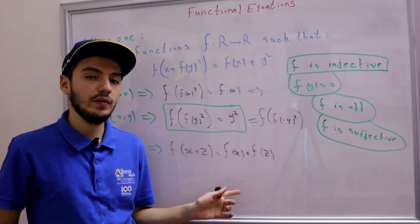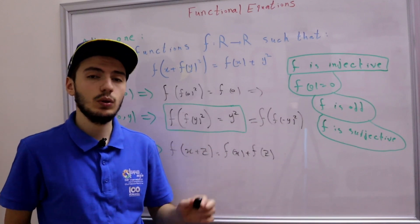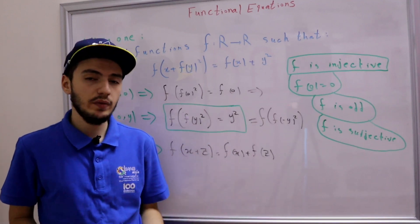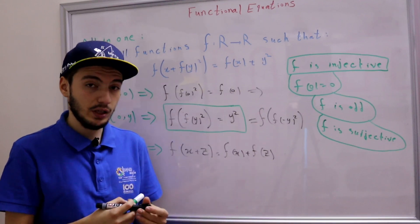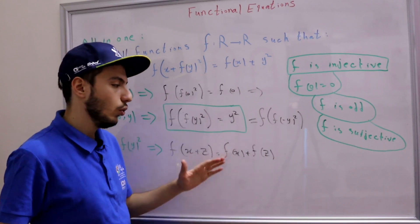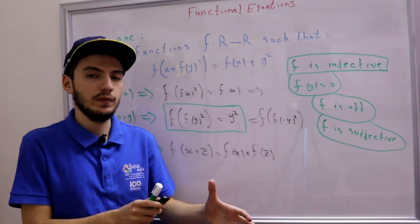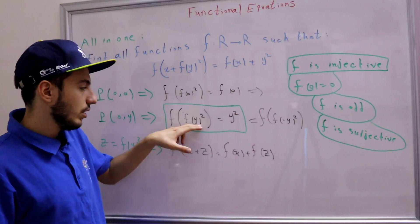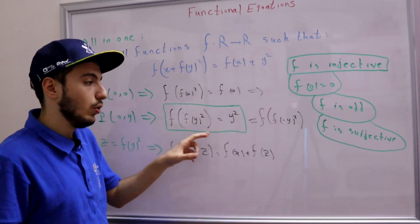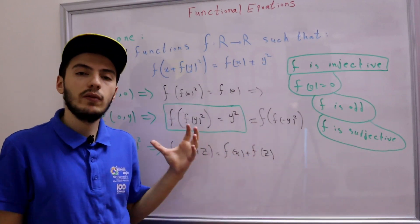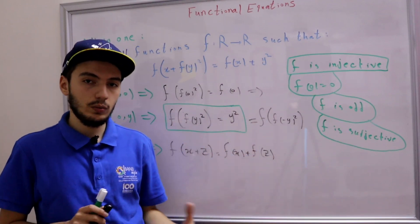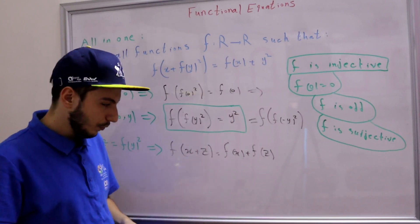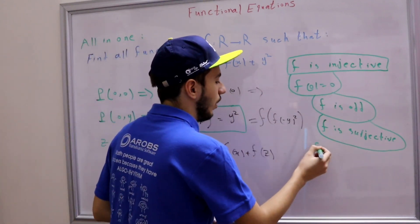But we need to show that f is increasing. From earlier videos, all we need to show is that f maps positive inputs to positive outputs. We already know this from f(f(y²)) = y²: since f is surjective, f(y²) covers all positive reals, and these map to positive outputs. So f is increasing.